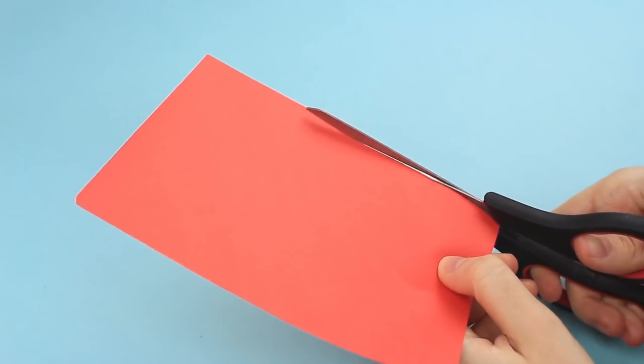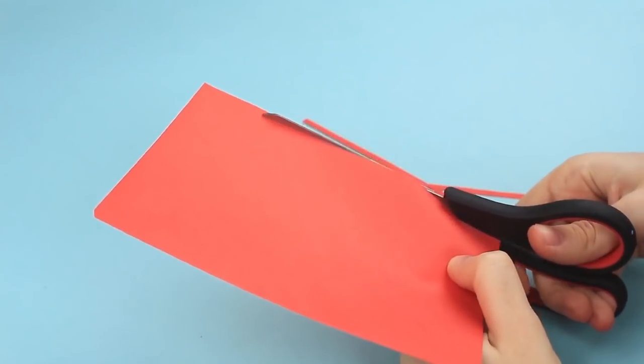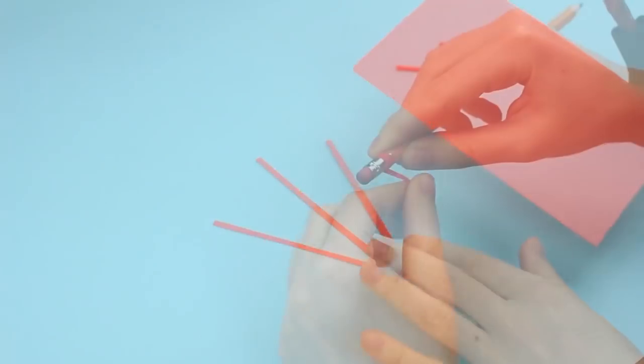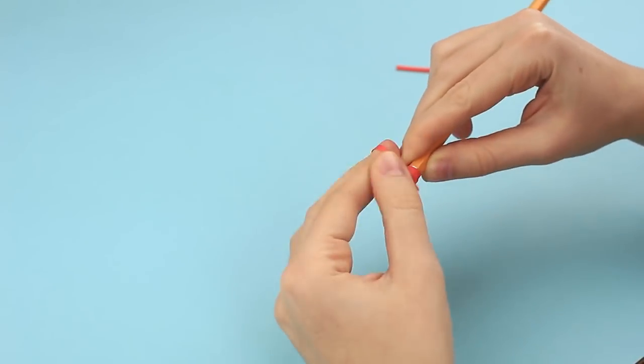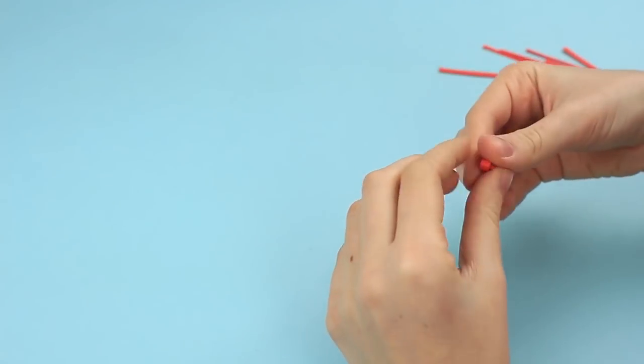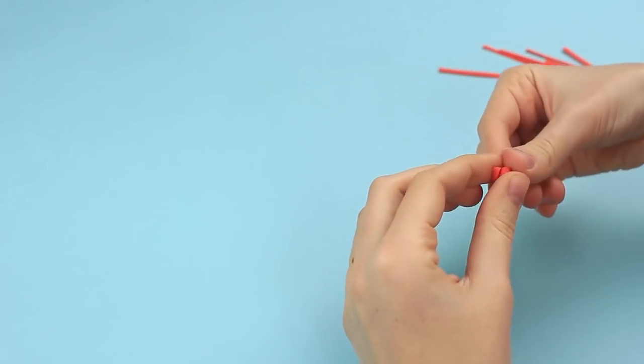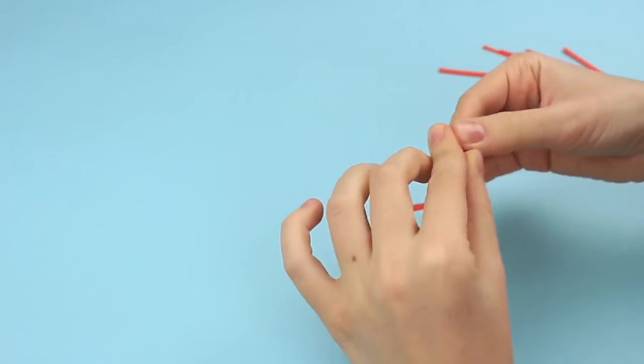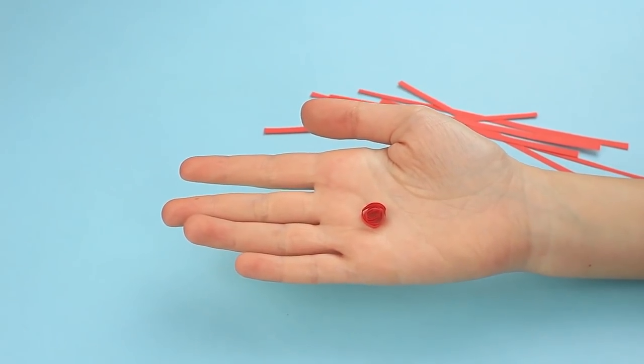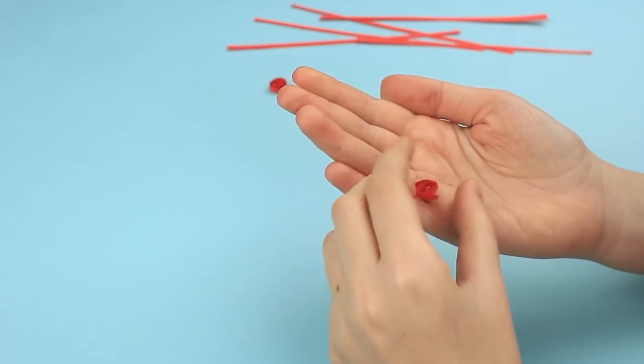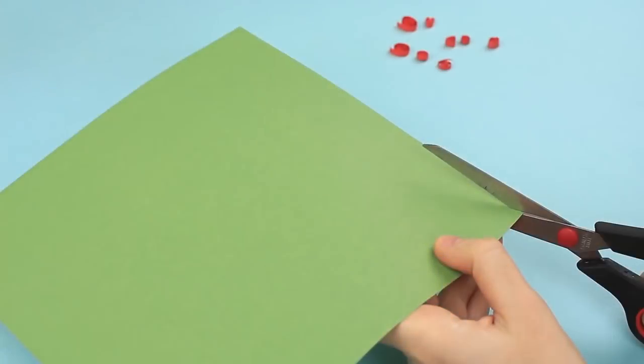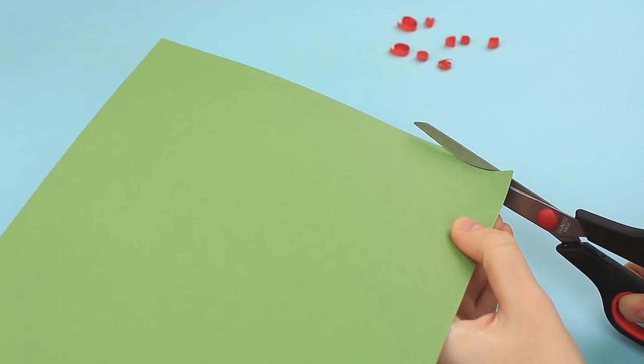Now cut out several thin red strips. Twist them tight. Wind a strip around a pencil first. Then roll up with your fingers. We've got such a pretty rose flower. Make a few more various sized roses. Cut out small green paper leaves.